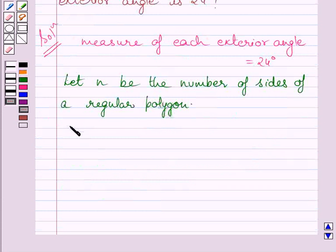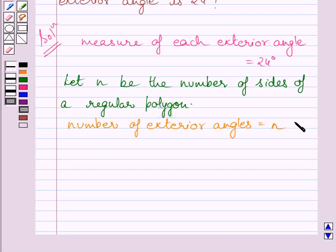Number of exterior angles of a regular polygon is equal to number of sides of a regular polygon, that is N. So we get number of exterior angles is equal to N.